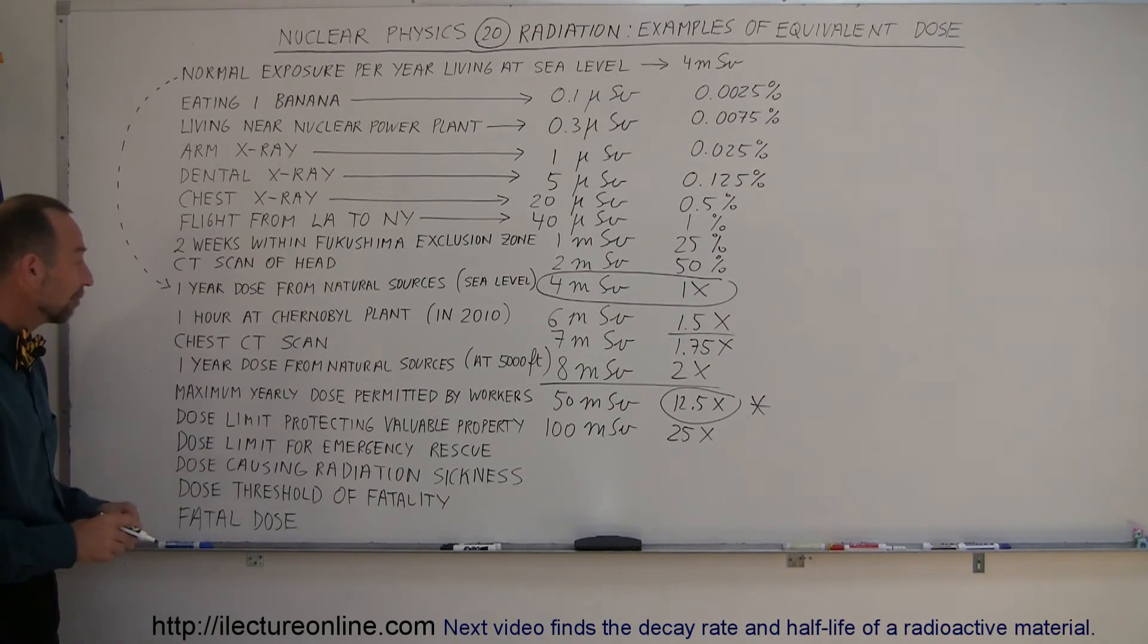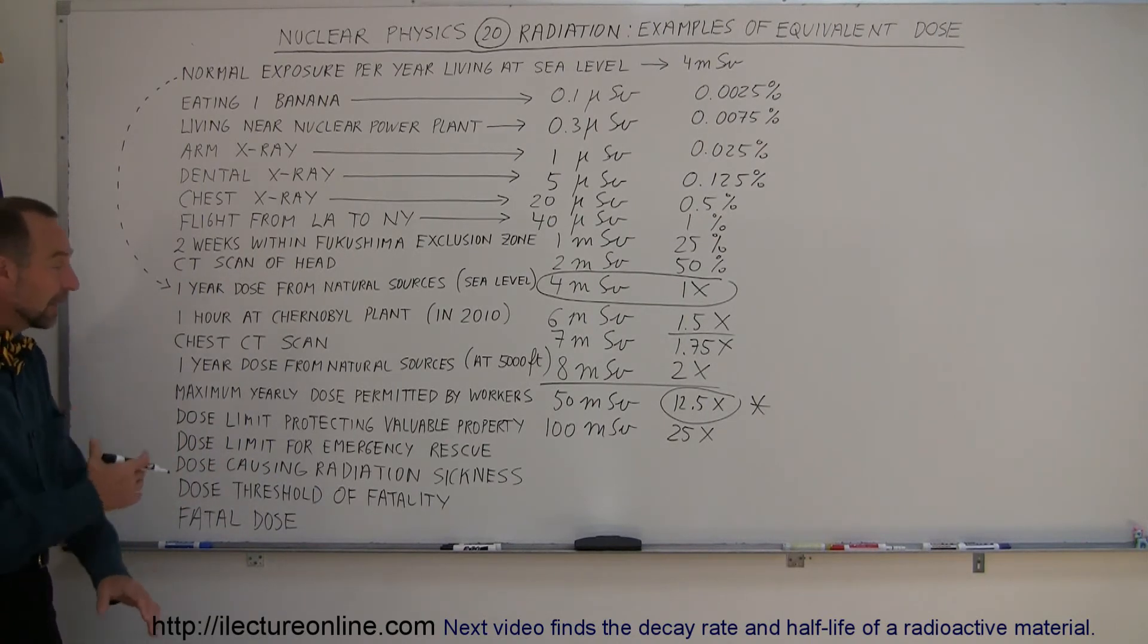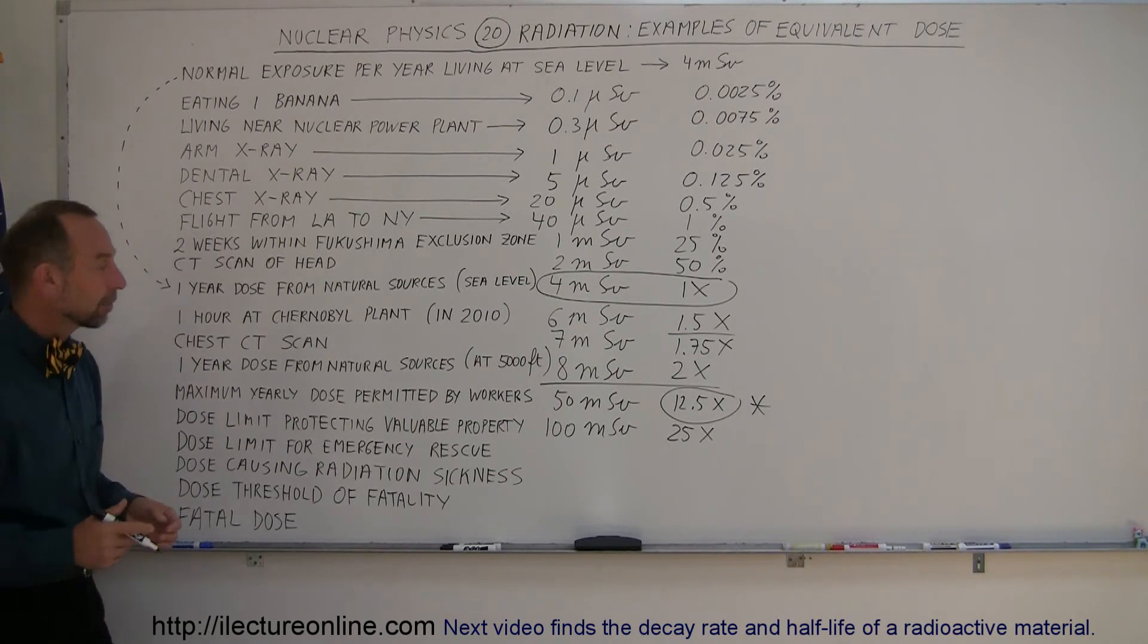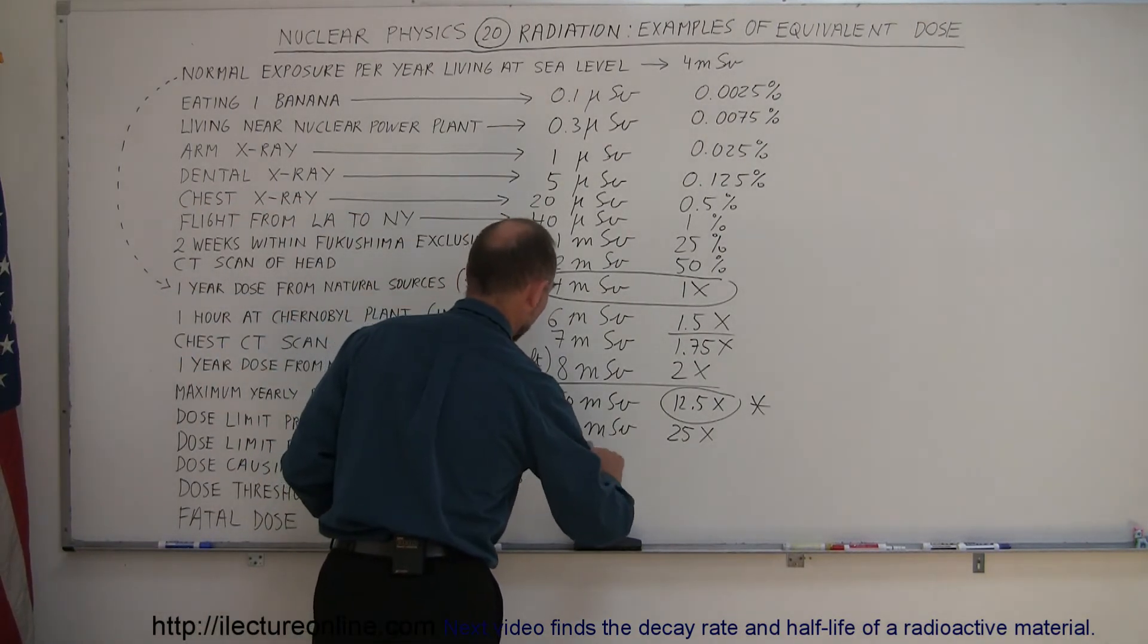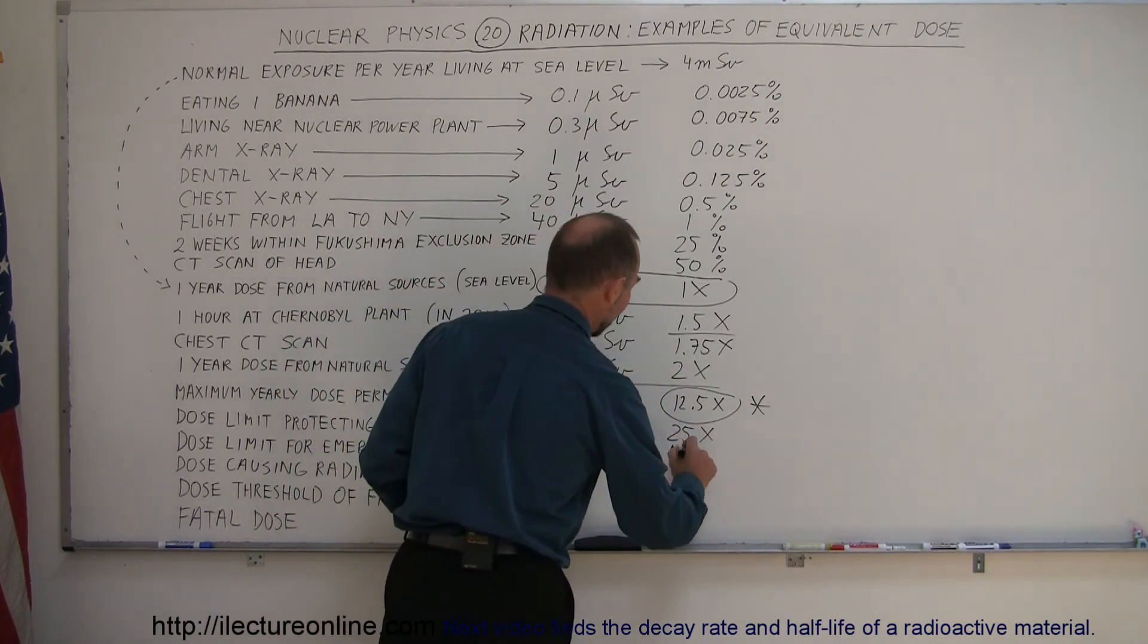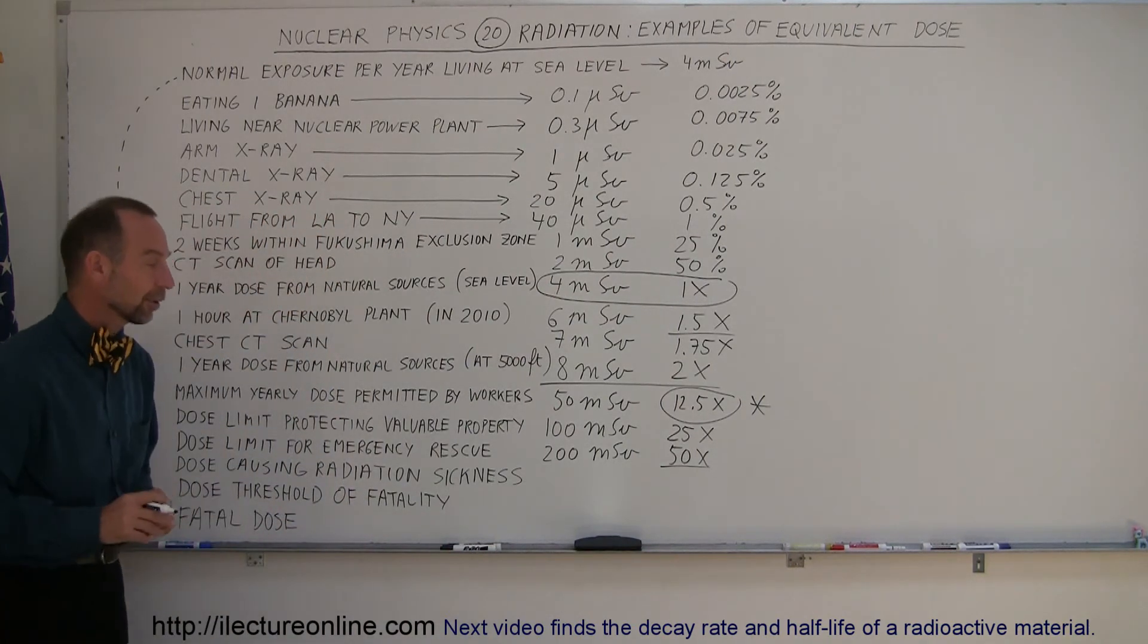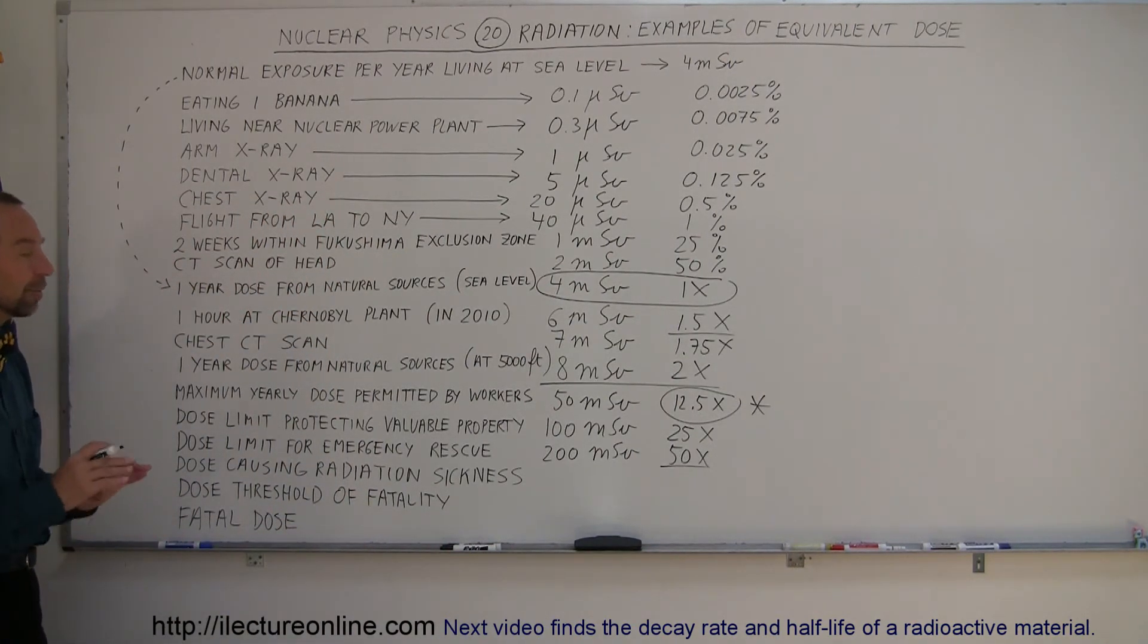If you have to go in and maybe save somebody's life, somebody is dying or somebody has been injured, they can't get out of the plant, you want to go rescue them, then you're allowed to receive twice as much of that radiation or 200 millisieverts of radiation. You're at 50 times what a normal person receives in a given year living on the earth. At 200 millisieverts, the government has done tests and they said there's no noticeable effects of that radiation if you receive it on a one-time basis.